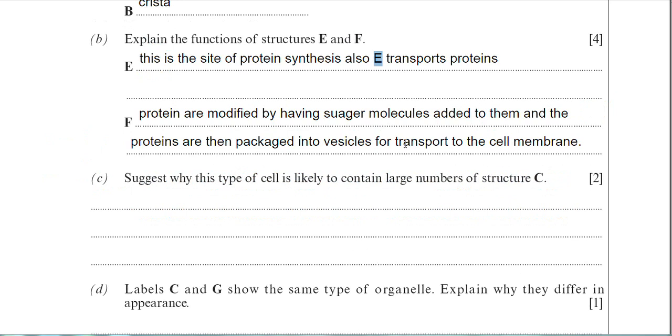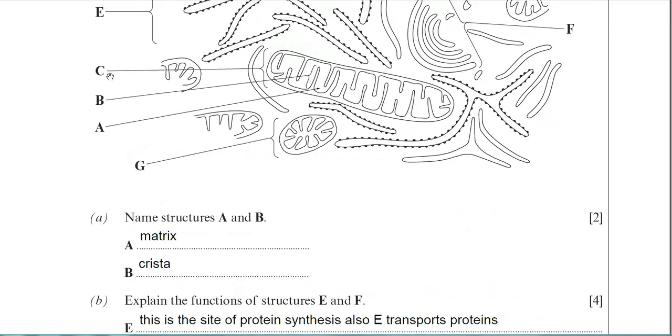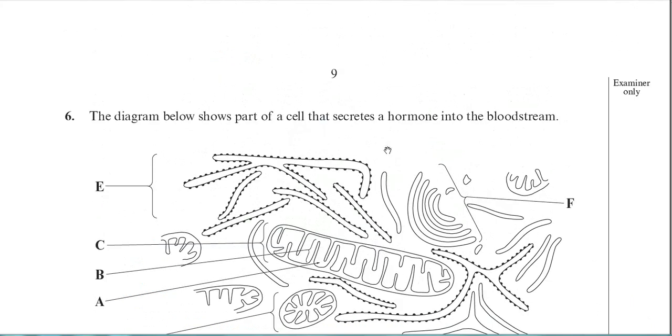Part C then suggests why this type of cell is likely to contain large numbers of structure C. So if we scroll back up to the diagram, structure C, of course, is the mitochondrion. Now why would this cell have lots of mitochondria in it?